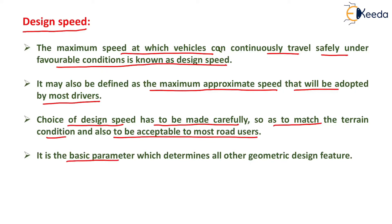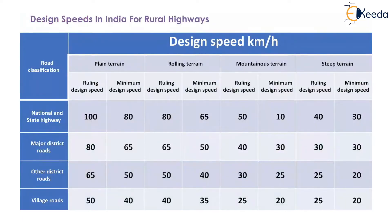Design speed is the basic parameter which determines all other geometric design features. Depending on the design speed, we have to provide the super elevation, stopping sight distance, and overtaking sight distance. They all depend on the design speed, as well as the radius of the horizontal curve and vertical curve, which only depend on the design speed.